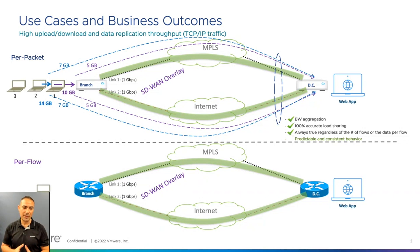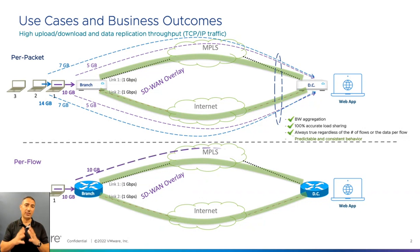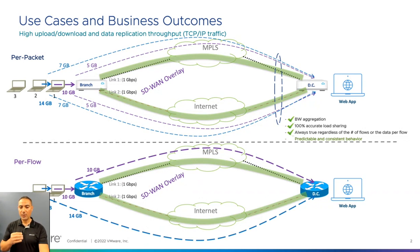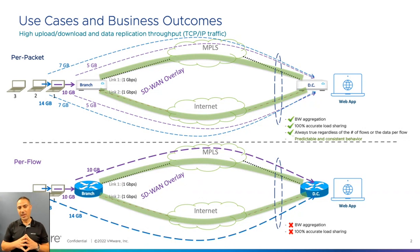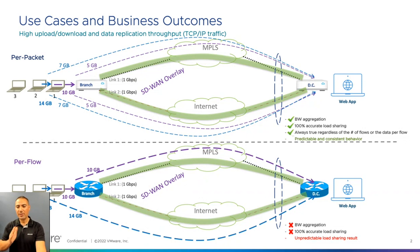Now let's see how pair flow handles the same thing. When the first user comes in and sends 10 gigabytes, the SD-WAN device in pair flow technology will use one circuit only to send the whole 10 gigabytes. When the second user comes in with 14 gigabytes, the SD-WAN device will send the whole 14 gigabytes over circuit number two. What you can see here is unequal load sharing, and this will never give us bandwidth aggregation. The application layer for user number one will always experience the performance of one circuit only. This will never give us 100% accurate load sharing because we don't know how big the data in each flow is. This will always depend on the number of flows — we always need a lot of flows to get some kind of equal load balancing — and this gives us unpredictable load sharing results, because we don't know how much data is in each flow.